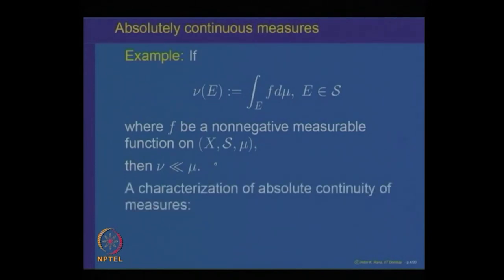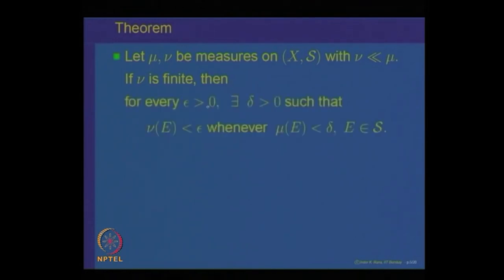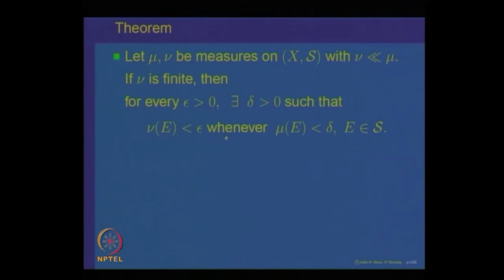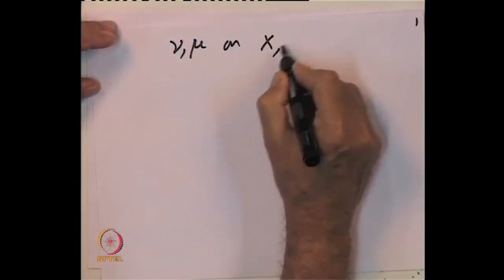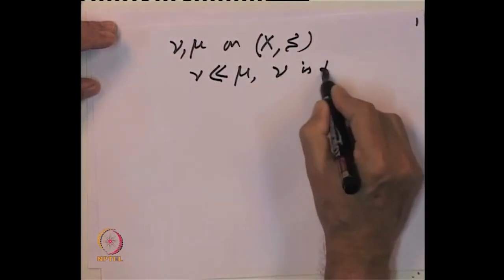Let us give a characterization of absolutely continuous measures in terms of an epsilon-delta definition, which looks similar to absolute continuity of functions. We want to prove: if mu and nu are two measures such that nu is absolutely continuous with respect to mu, and if nu is finite, then for every epsilon greater than 0, one can find a delta greater than 0 such that whenever mu of E is less than delta, nu of E is less than epsilon. We are given that nu and mu are measures on the measurable space (X, S), nu is absolutely continuous with respect to mu, and nu is finite.